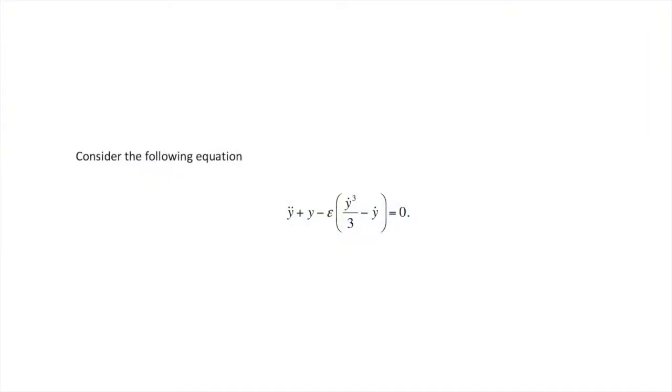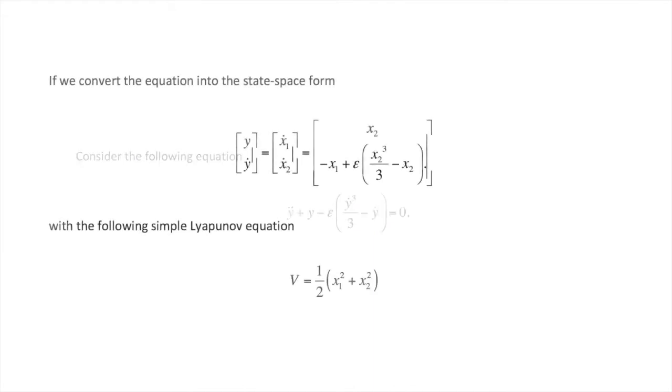Consider the following equation. If we convert it into state space form, it looks like this. With the following simple Lyapunov equation, we can easily find V dot.